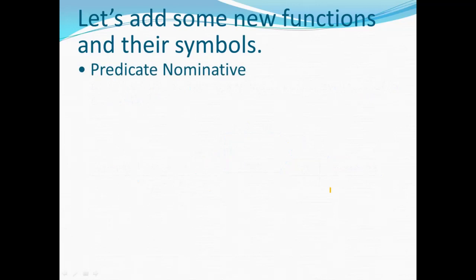Most of the time, your series branches will be open on one end with a stub on the other. But once in a while you'll need branches closed on both ends with stubs on both ends. Now let's talk about the predicate nominative.